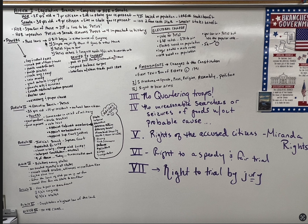In order to have a bill become a law, a bill begins in either House of Congress. A simple majority is needed in one House of Congress, then it goes to the other House of Congress. The President signs it, it becomes a law. The President vetoes it, it goes back to Congress for two-thirds of the vote to override the presidential veto.